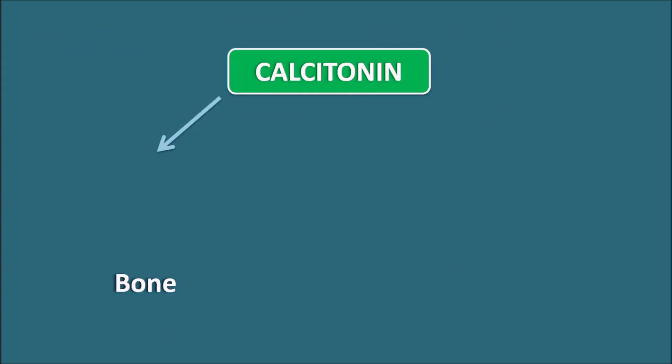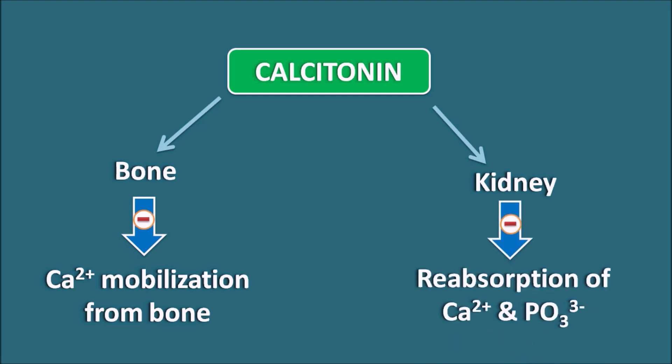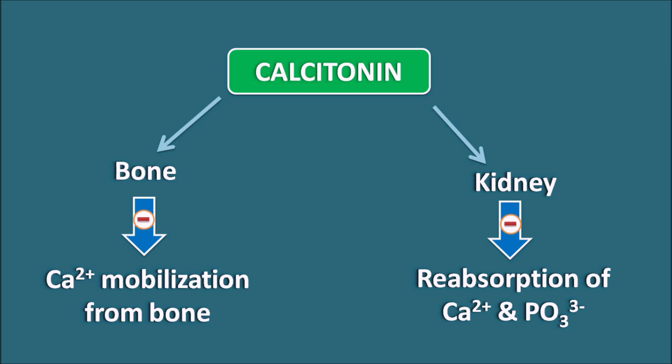Now let us see how calcitonin acts. Calcitonin shows important action on two organs: the bone and the renal system, that is the kidney. On the bone, calcitonin inhibits calcium mobilization from the bones, so the resorption process of the bones can be inhibited. Within the kidney, calcitonin can control the reabsorption of calcium and phosphates — it inhibits the tubular reabsorption of calcium as well as phosphate, thereby increasing these two ions within the urine. That is how calcitonin controls calcium levels within the plasma.